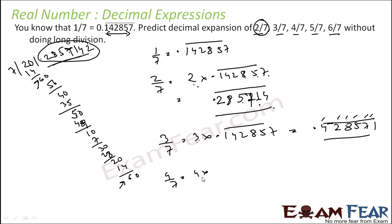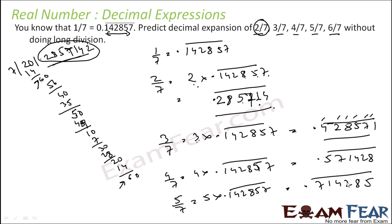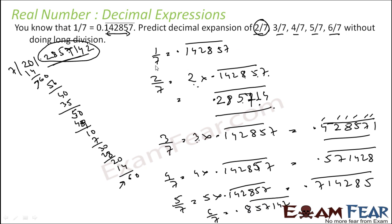Similarly, 4 by 7 is 4 into 0.142857 repeating — you can easily get 0.571428 repeating. Similarly, 5 by 7 will be 5 into that value, giving 0.714285 repeating. And 6 by 7, you solve it, you get the corresponding value. It's pretty easy — you just have to multiply the number.